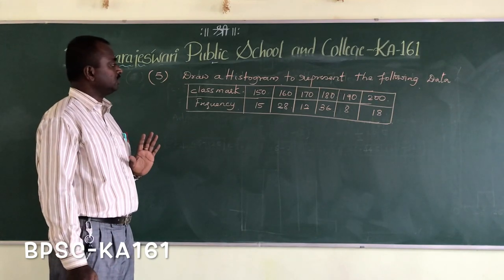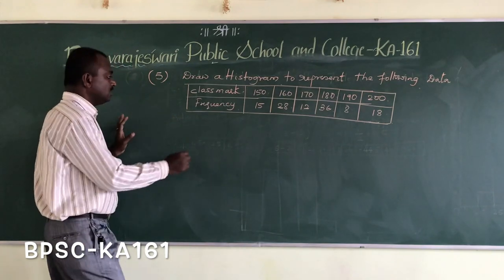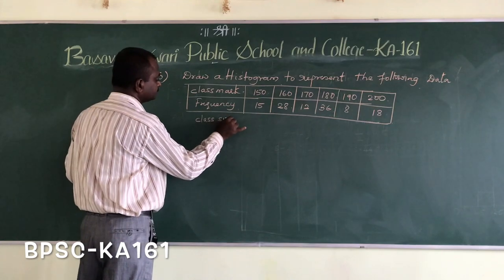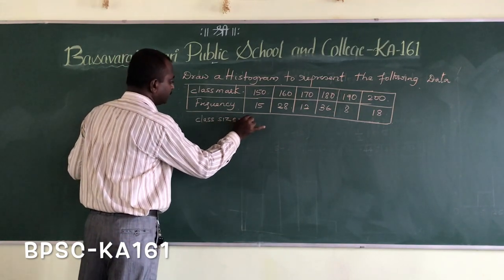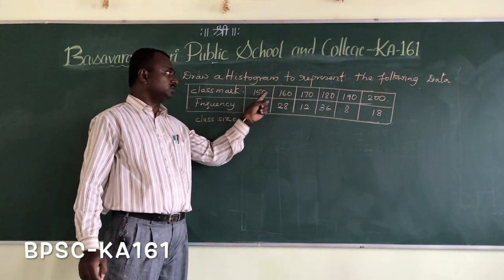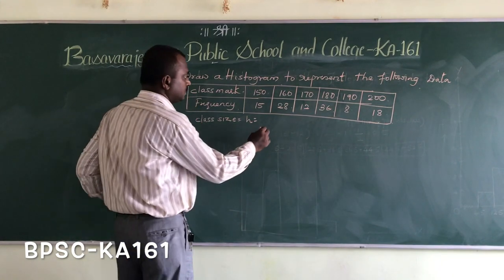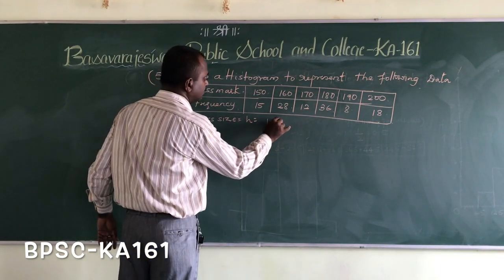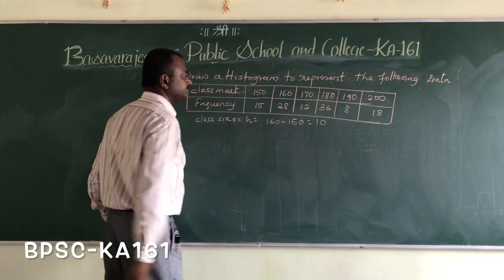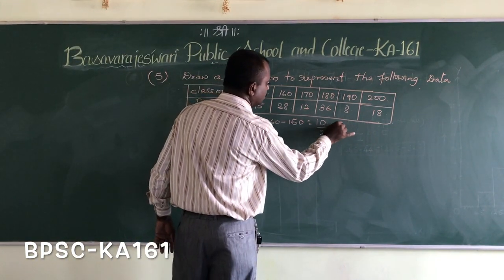In order to find out the class interval, we first have to find out the class size, represented as h. The difference between two successive class marks is nothing but the class size. So that is 160 minus 150, which equals 10, divided by 2, which equals 5.